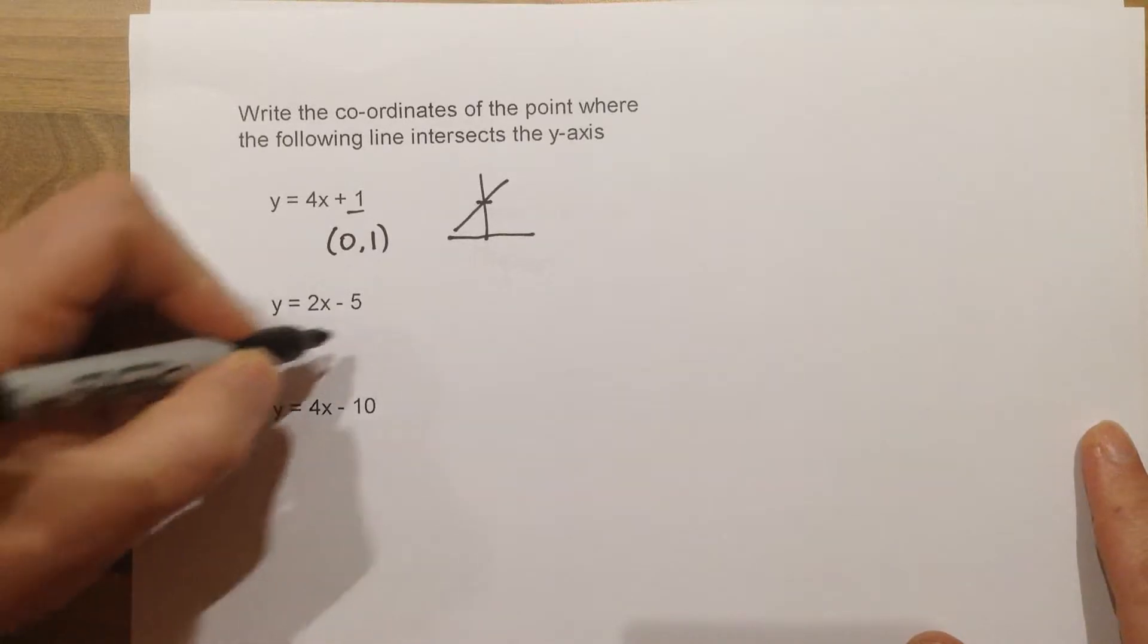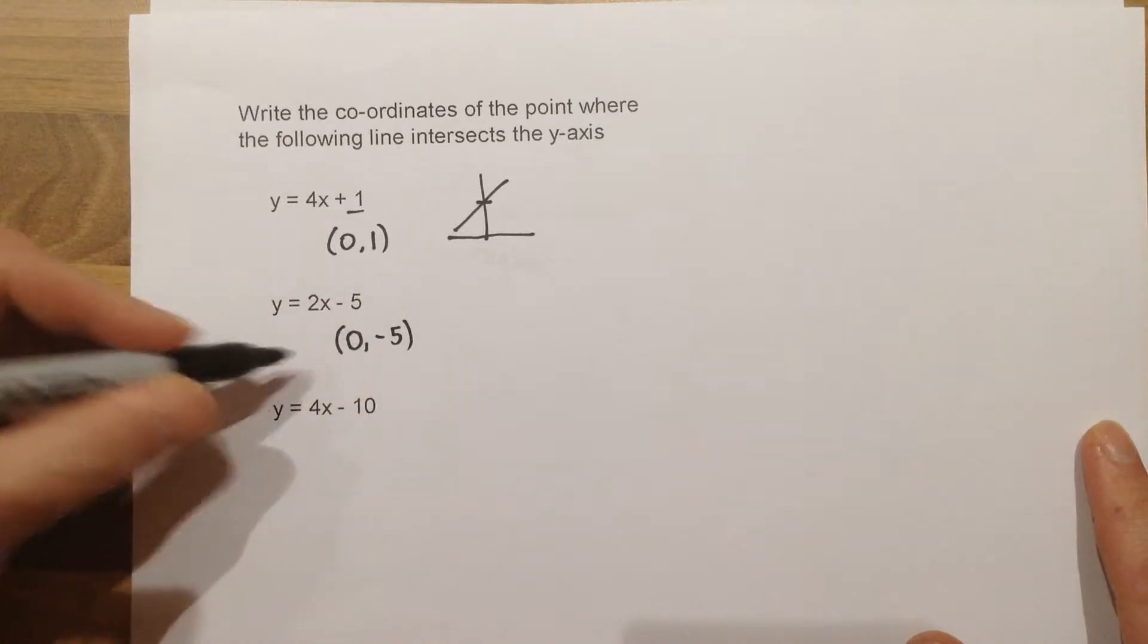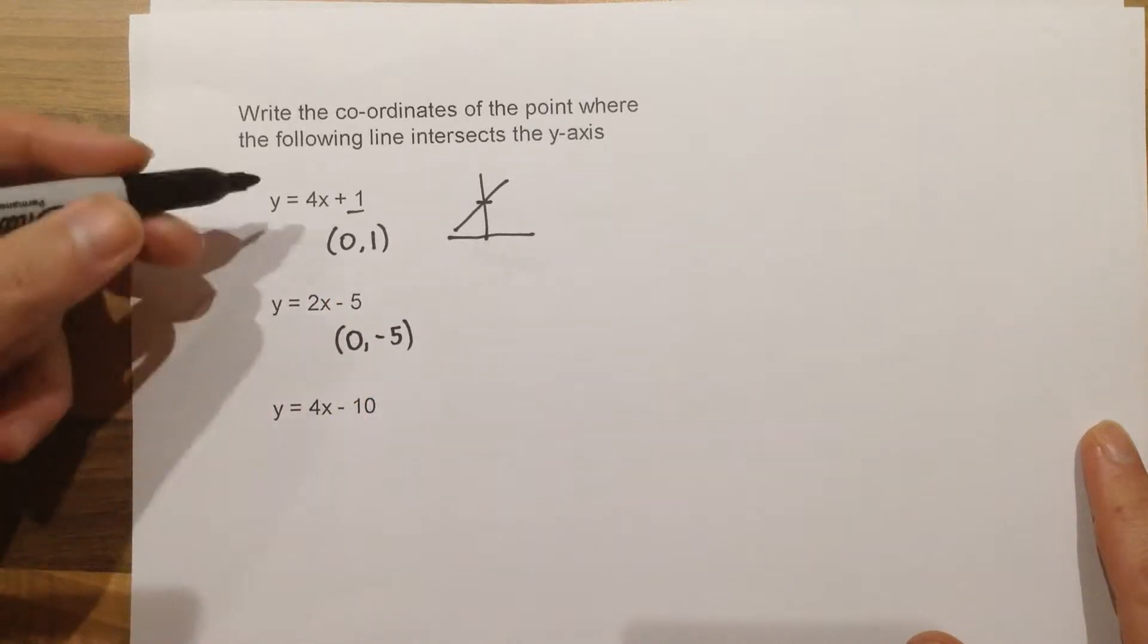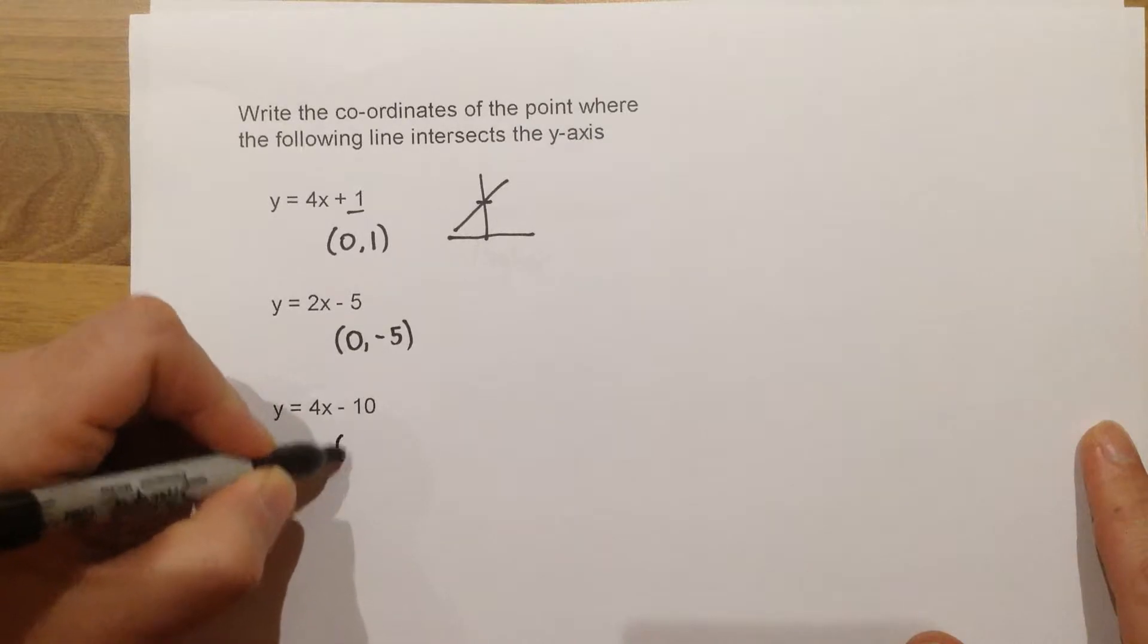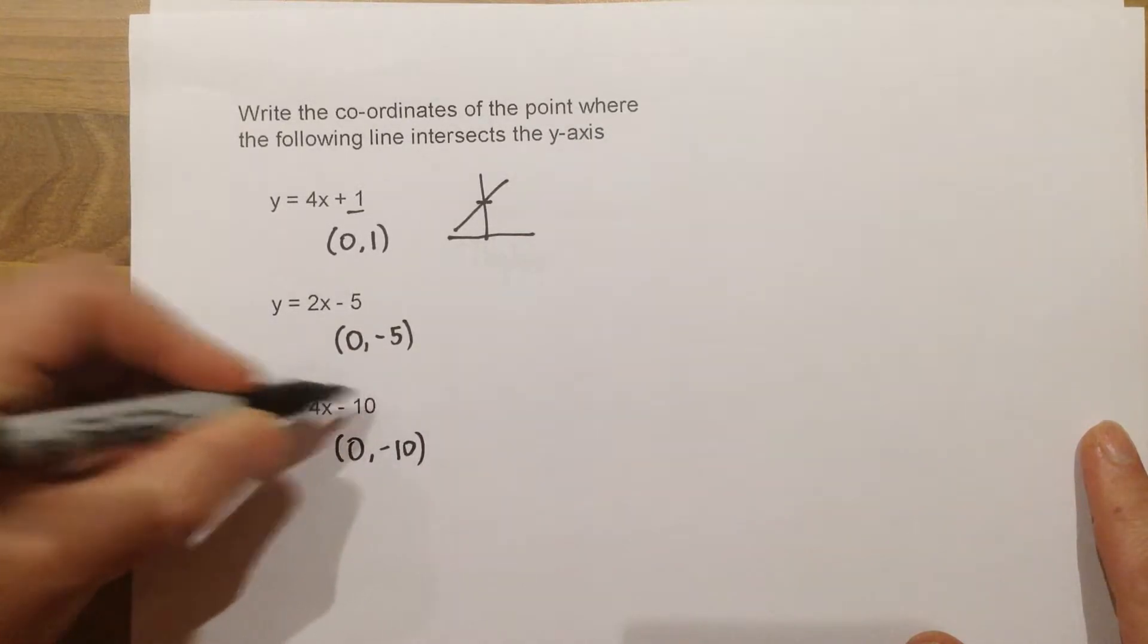Much the same, for this one, it would be 0, and it crosses at minus 5. So 0, minus 5 is the y-intercept, and for this one, we would have 0, minus 10, crossing at minus 10.